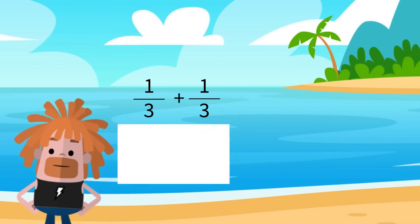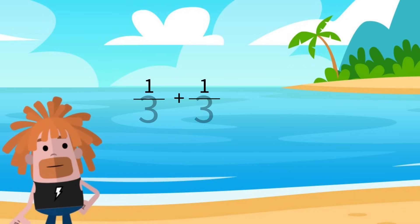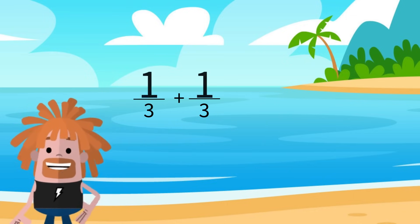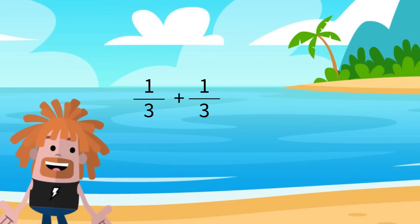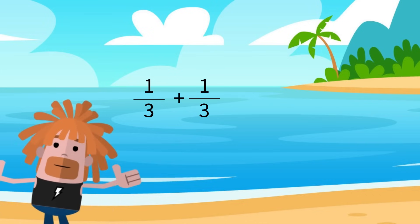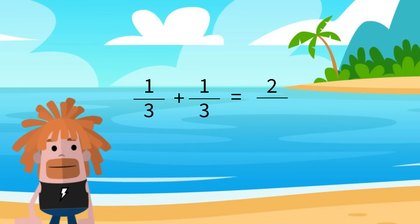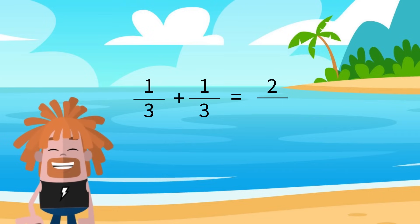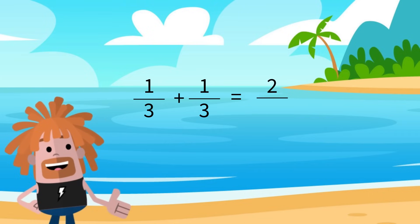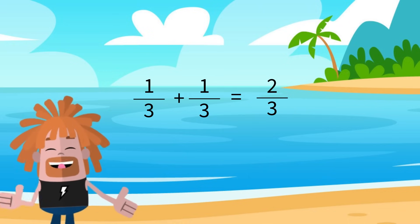Good news! If both fractions have the same denominator, we can add the top numbers then keep our bottom number. Let's give this a try by adding 1 third plus 1 third. 1 plus 1 is 2, and we are just going to write back our denominator. The answer is 2 thirds.